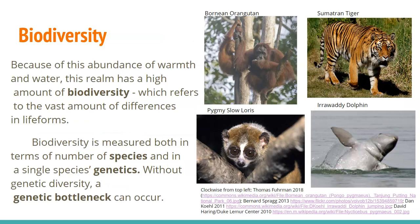Lots of moisture and warmth means lots of happy plants, and happy plants make happy animals. Because of all this warmth and water — the two big things plants need to grow — we have a massive amount of biodiversity in this realm. Indonesia is second in biodiversity only to Brazil. Much of this realm is tropical rainforest, with massive trees and dense vegetation.